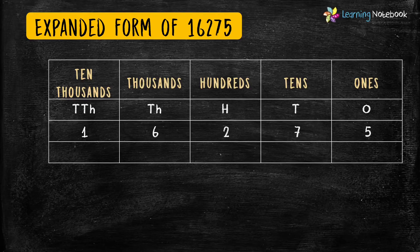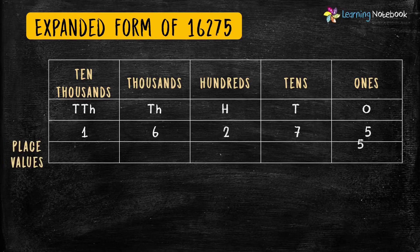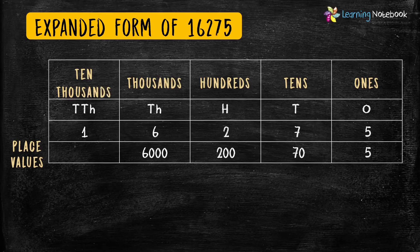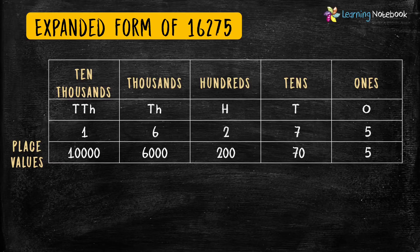Now let's write the place values of all these digits. The place value of 5 is 5. The place value of 7 is 70. The place value of 2 is 200. The place value of 6 is 6,000. And the place value of 1 is 10,000.